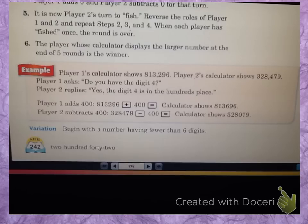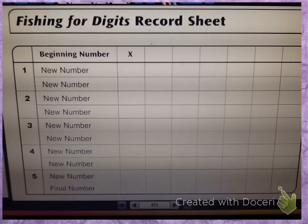So your record sheet looks like this. So you're going to write your number, your six digit number at the top. So let's say that I had 726493. So that was my starting number in my calculator.